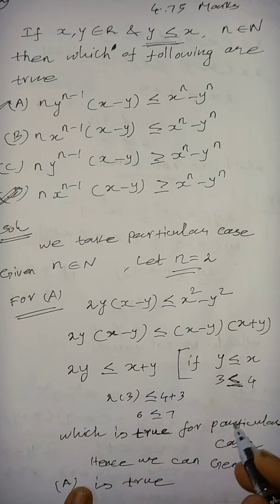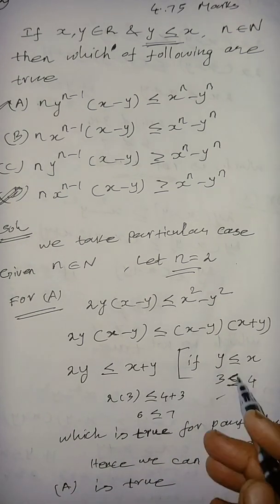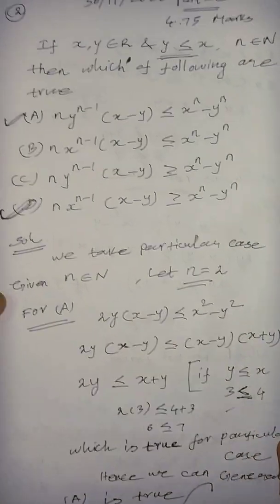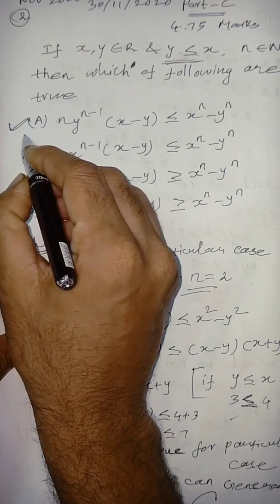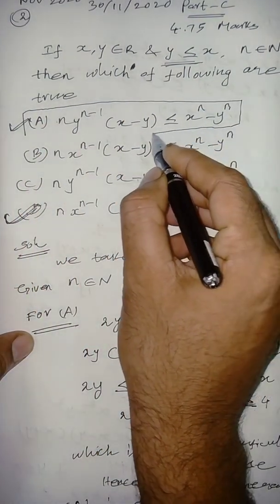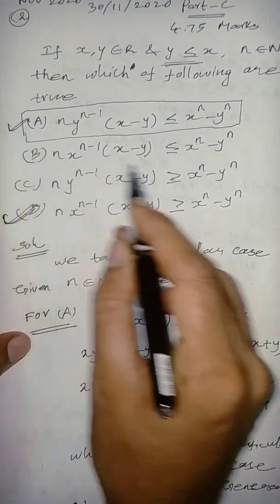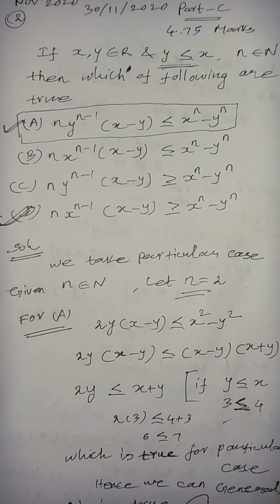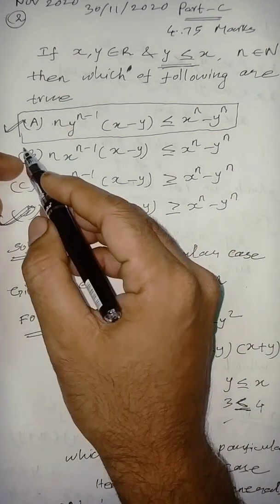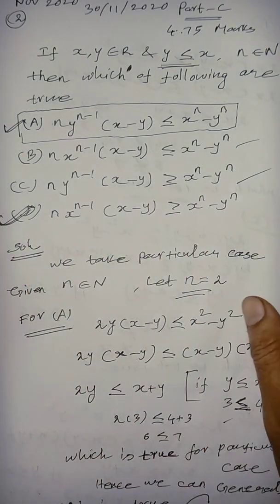So, which is true for the particular case. So, we can generalize this one. So, option A is true. Option A is a current option. You can get easy mark, 4.75 mark in part C machine. Okay. So, similarly, we are going to check the remaining option B and C also.